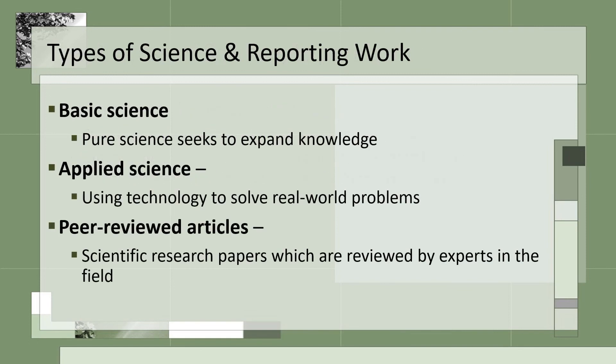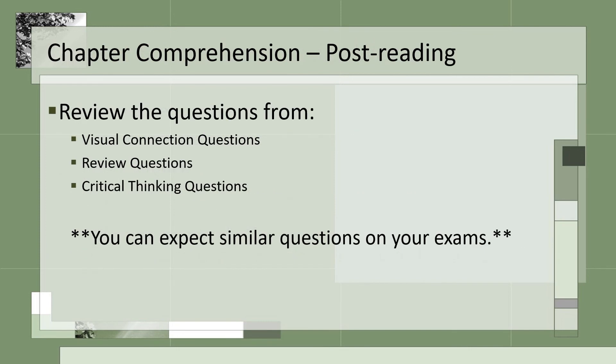There are two main categories of science. The basic sciences research to further our knowledge, while applied sciences take that known information in conjunction with technology to solve problems. When a researcher has successfully completed an experiment, they will want to share their results. Scientists use a peer-reviewed process where their work is reviewed by other experts in the field. Now that we have concluded chapter 1, be sure to go back to the online textbook and review the questions provided. These will be the types of questions you can expect to see on your exam.